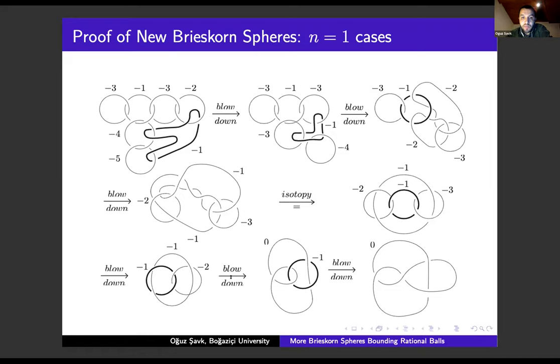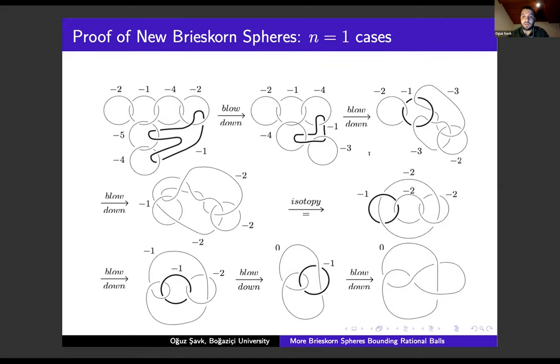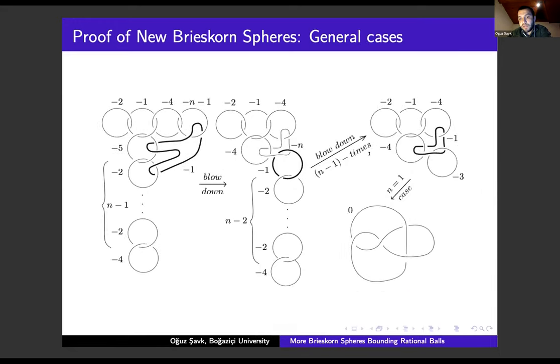By using the lemma of Akbulut and Larson, we conclude that our spheres bound rational balls. For the general case, in the first passage we again blow down the minus one unknot and get the second picture. Here you see minus two chains, so applying blow-down m minus n times, we get the third picture, which occurred in the base case. Again, you follow the same passages and get the three-manifold Y.